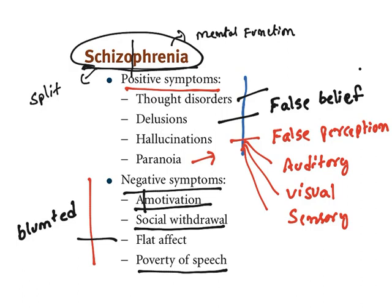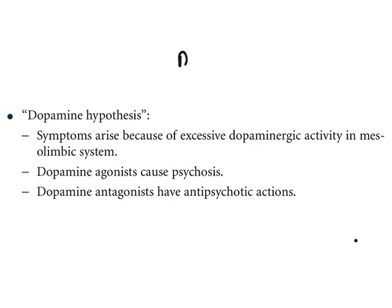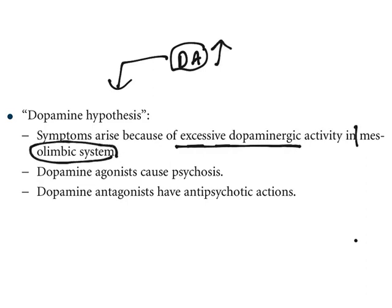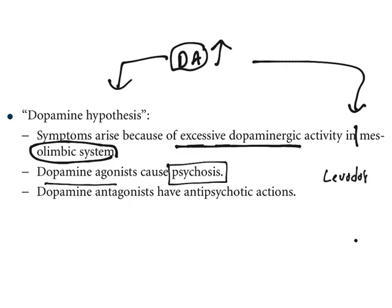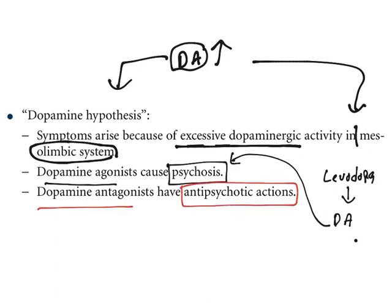The pathophysiology of schizophrenia is explained by the dopamine hypothesis. According to this, symptoms arise because of excessive dopaminergic activity in the mesolimbic system — increased levels of dopamine at the mesolimbic system cause schizophrenia. Evidence: dopamine agonists can cause psychosis — for example, levodopa used in Parkinson's gets converted to dopamine in the brain, and its adverse effect is a kind of psychosis.